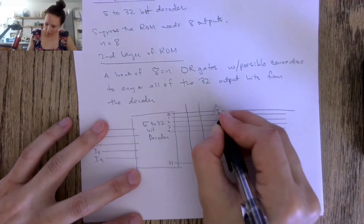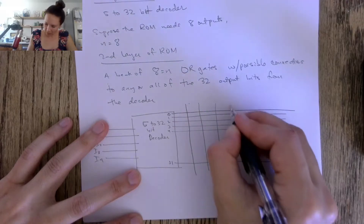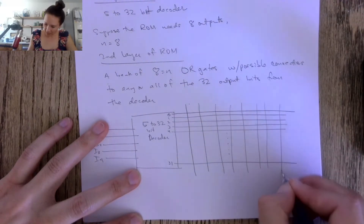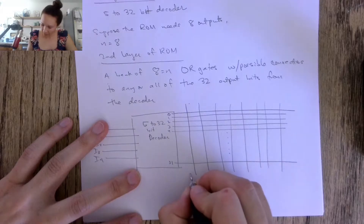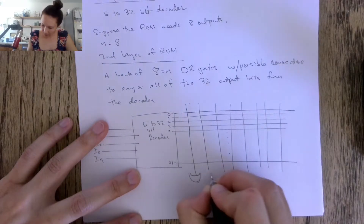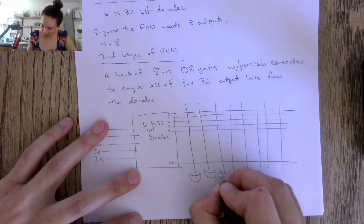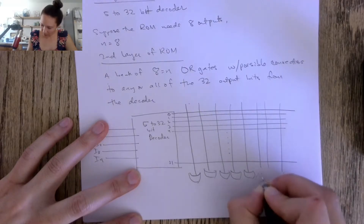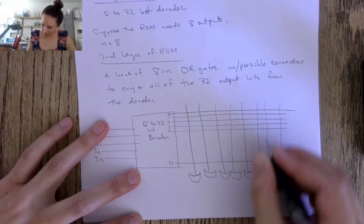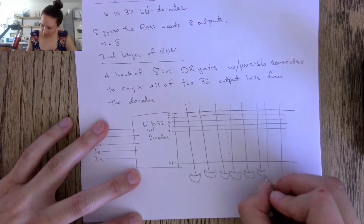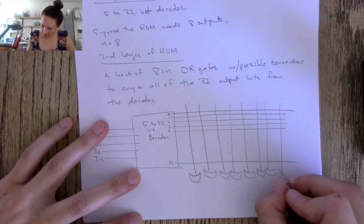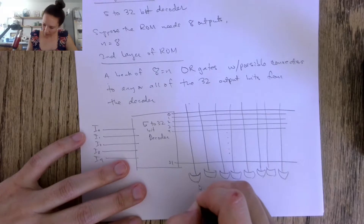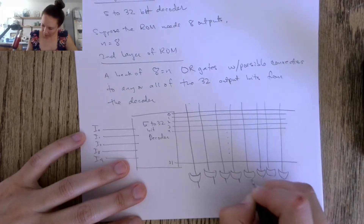There are eight OR gate lines — one through eight. It's a shorthand way of saying that everything along each horizontal line is ORed together. Those are my ORs, and the output of those OR gates are the outputs of my ROM.